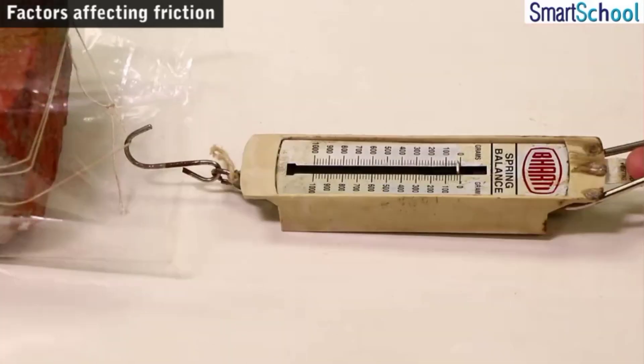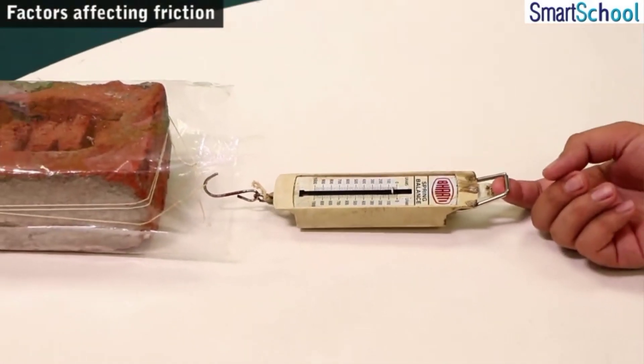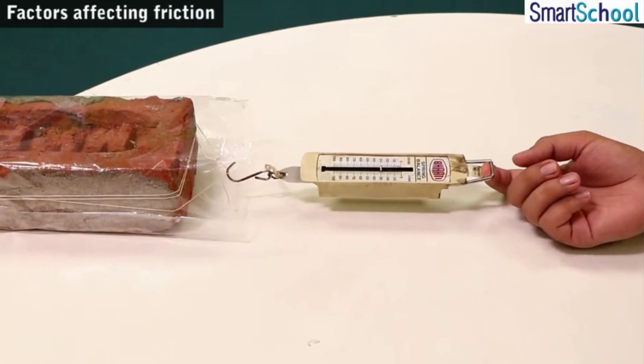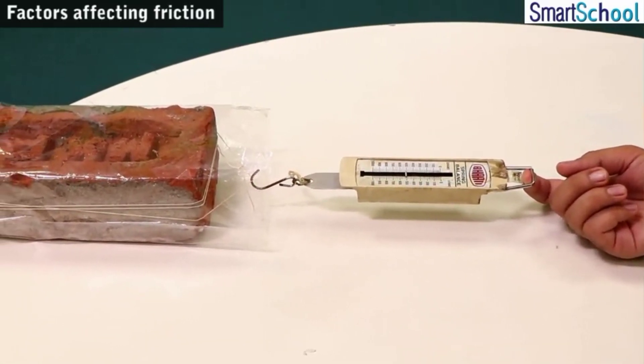Now we cover the brick with a piece of polythene and repeat the same activity. So what do you think now? Will there be any change in the reading of the spring balance, and is it going to be more or less than the previous case?